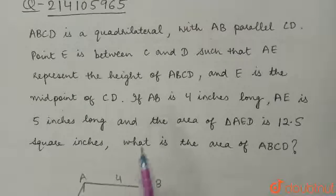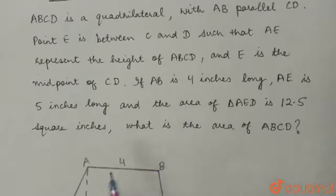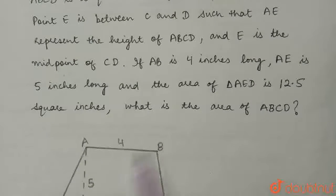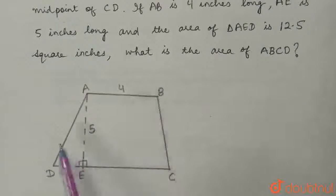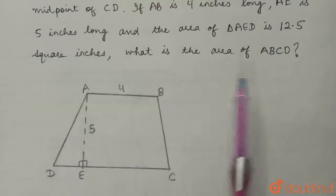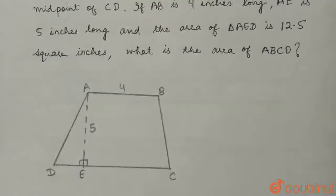Further, the question says if AB is 4 inches, AE is 5 inches long, and the area of triangle AED is 12.5 square inches, what is the area of ABCD?